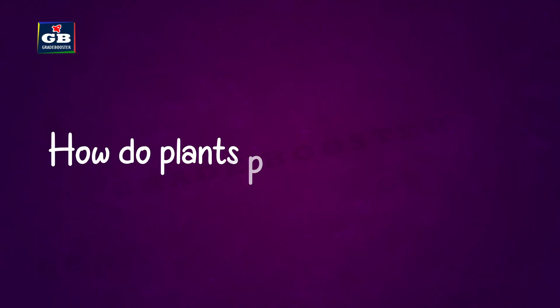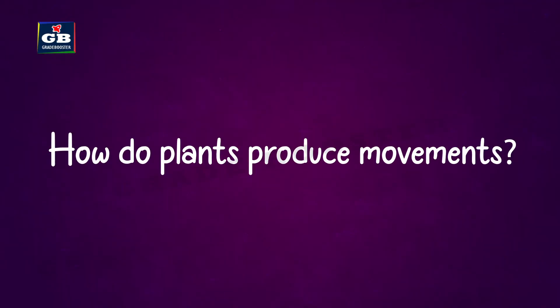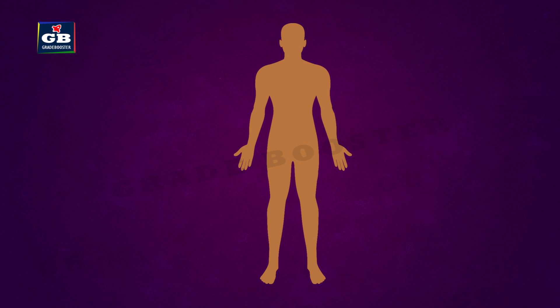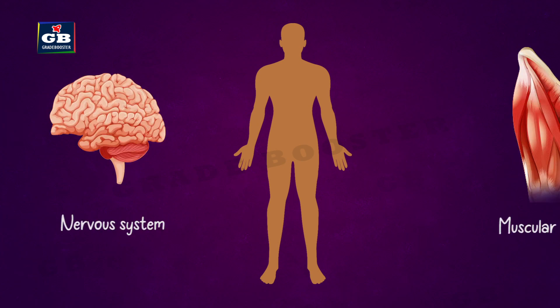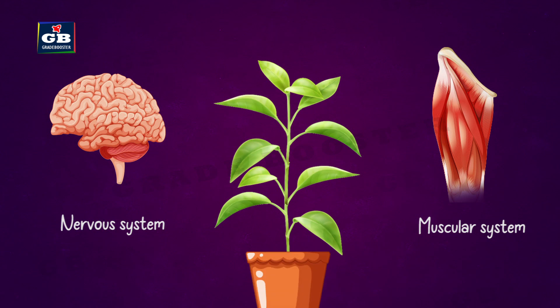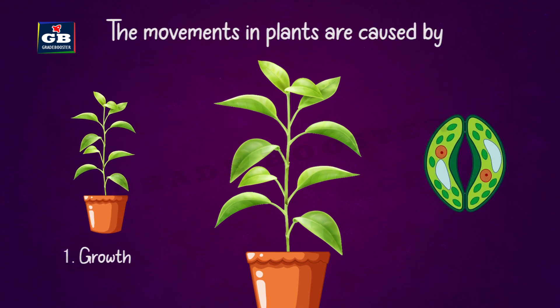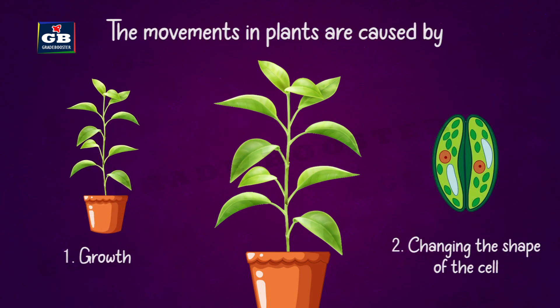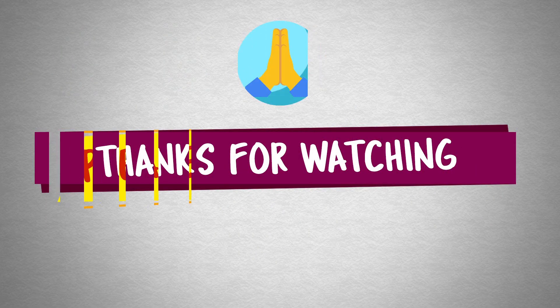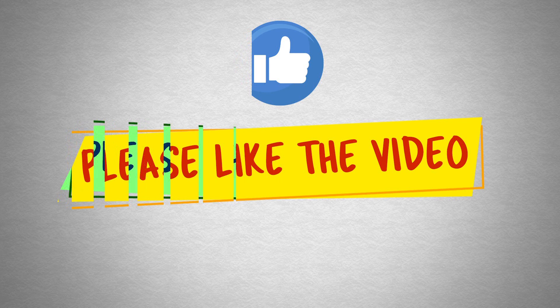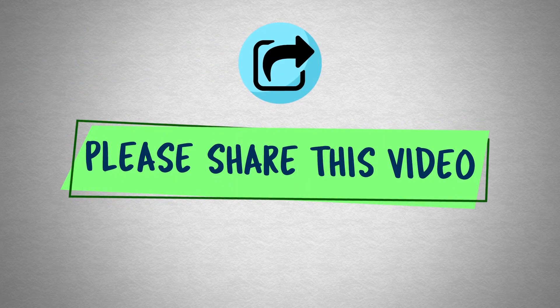How do plants produce movements? Animals produce movements with the help of the nervous system and muscular system. But in plants, both the nervous system and muscular system are not present. The movements in plants are caused either by growth or by changing the shape of their cells.